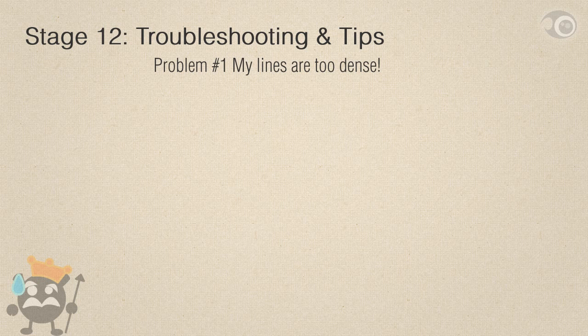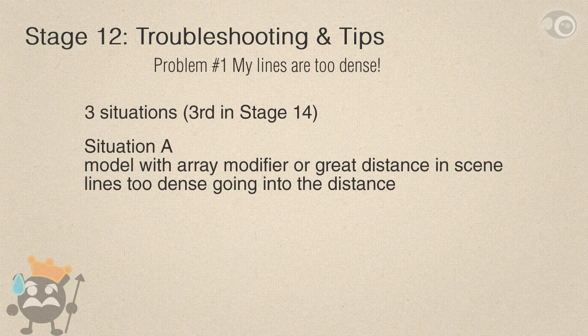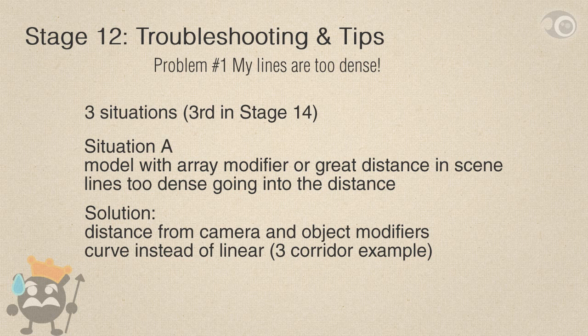Problem number one: my lines are too dense. There are three main cases. The third will be shown in stage 14, so stay tuned for that one. Situation A: you model with an array modifier, or there are great distances in the composition where everything needs edge rendering, making lines too dense going into the distance. To solve it, use the line style's distance from camera and/or object modifiers. Using curve on those as linear with linear perspective will not solve the problem. You can refer to that in the three corridor example.